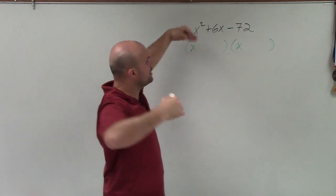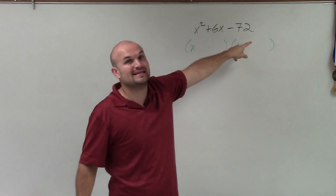So now what I need to do is determine what are going to be the values that multiply to give me negative 72.